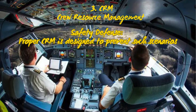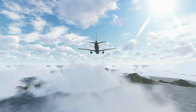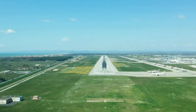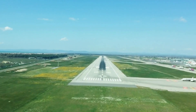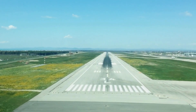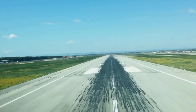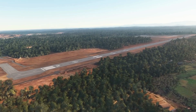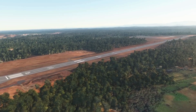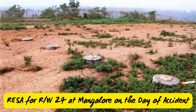Proper crew resource management is designed to prevent such scenarios, but in this case the breakdown allowed the error to progress further. As the aircraft approached the runway it touched down over 1,600 meters from the threshold of the 2,450-meter long runway. The remaining distance was simply not enough to decelerate the aircraft safely given its high landing speed and the wet surface — the plane was too fast and too far down the runway.